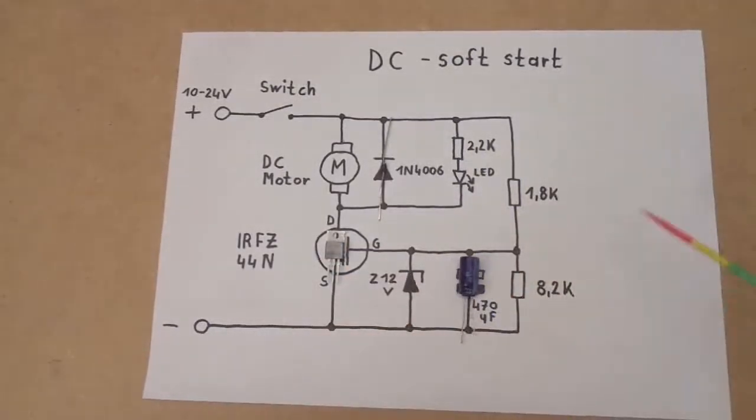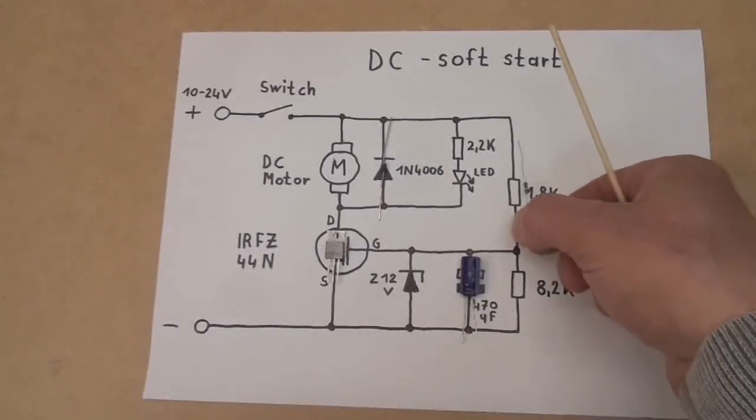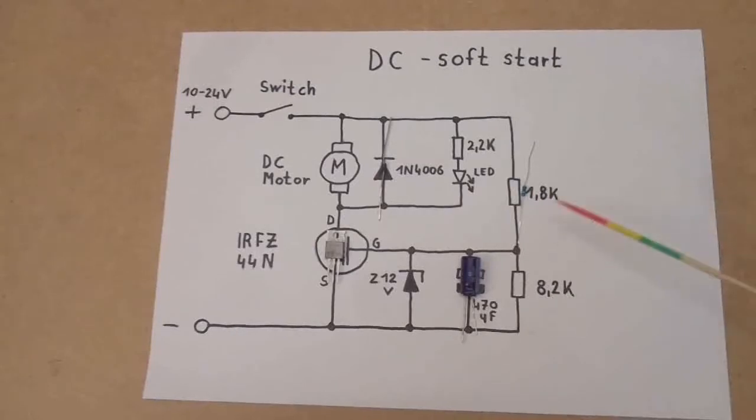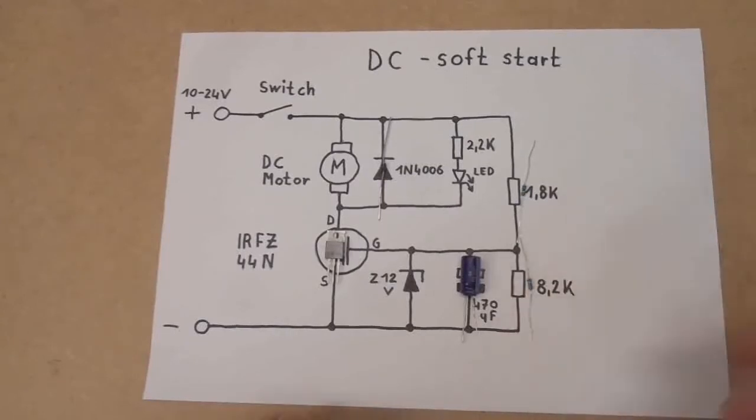This electrolytic capacitor I have here is 470 microfarad, but as I said you have to tinker around with this value. Furthermore, you need a 1.8k resistor, you need an 8.2k resistor which is the discharge resistor for this electrolytic capacitor, otherwise it would stay charged for a very long time.